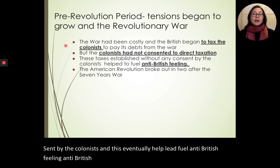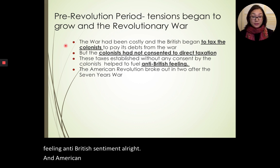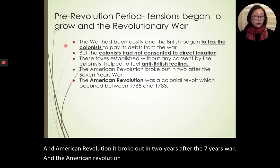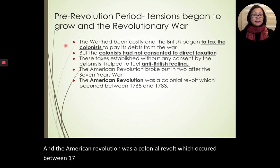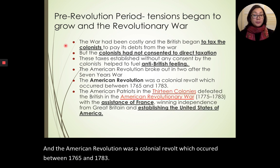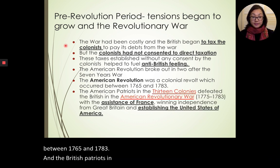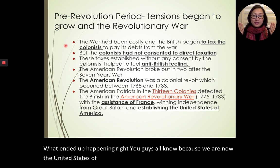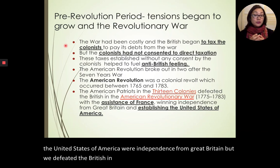The American Revolution broke out in the years after the Seven Years' War. The American Revolution was a colonial revolt which occurred between 1765 and 1783 involving the British patriots in the 13 colonies. We ultimately won and we are now the United States of America, independent from Great Britain — we defeated the British in the American Revolutionary War.